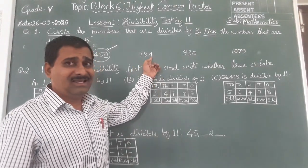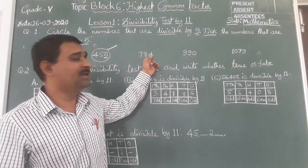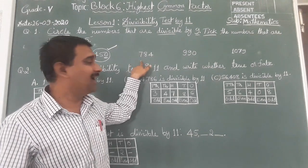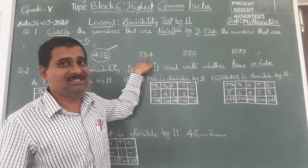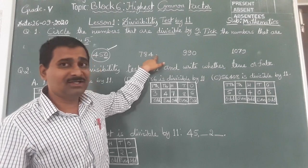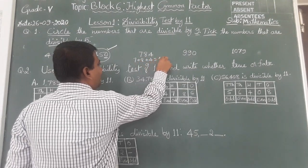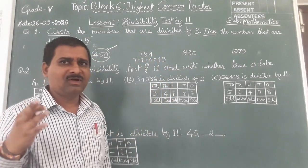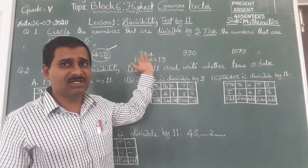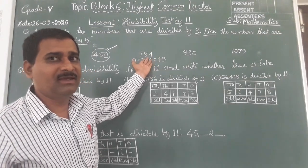784: only if the 1's place is 0 or 5 is it divisible by 5. There is no 0 and no 5, so this is not divisible by 5. Let us check divisibility by 9: 7 plus 8 is 15, 15 plus 4 is 19. 19 is not divisible by 9. So we should not circle it and should not tick mark it, because it is not divisible by 9 and not divisible by 5.